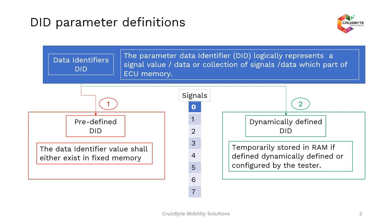So a DID is a number which references a single signal or multiple signals grouped under one particular unique ID. When working on diagnostic stack development, requirements can come from the customer, from OBD2, from vehicle manufacturer-specific DIDs, or from supplier-specific DIDs — each signal or data item has its own unique ID.